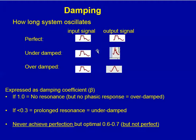The second problem with transducer systems is the phenomenon of damping. Damping refers to how long the system oscillates. In the perfectly damped system, the output signal would be identical to the input signal. In an under-damped system, the output signal has ringing with exaggerated spikes, and in the over-damped system, the arterial waveform is blunted.